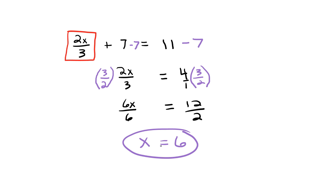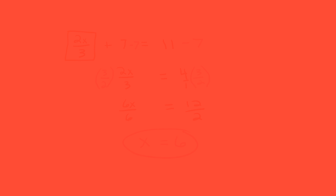So you can see that in this type of problem, there are generally two steps. First, you have to add or subtract to get the x term isolated, and then you're going to multiply or divide to finish the problem.